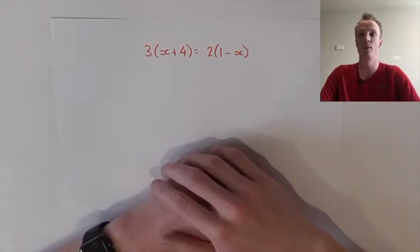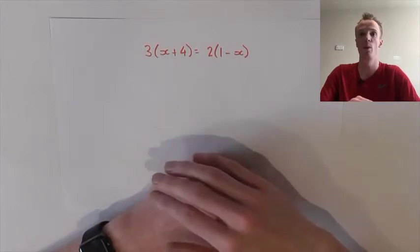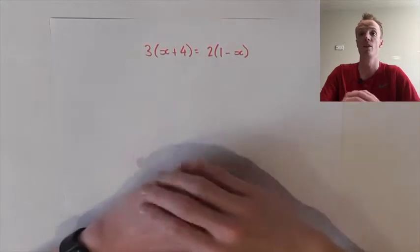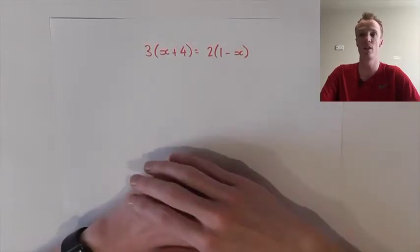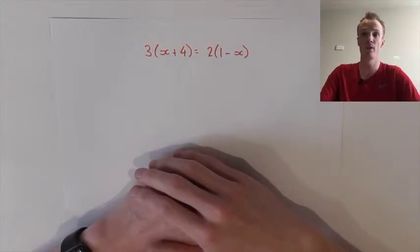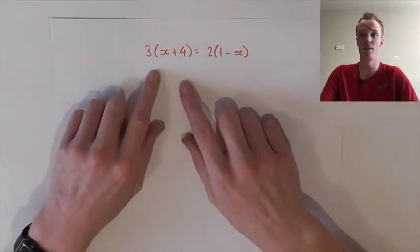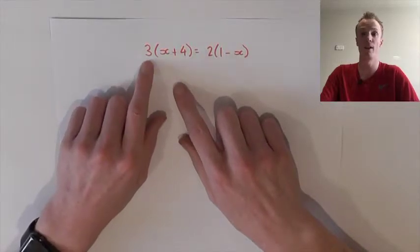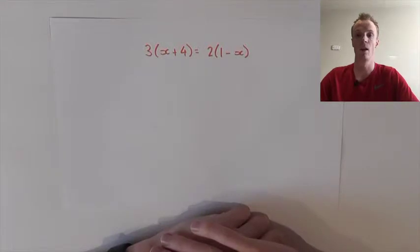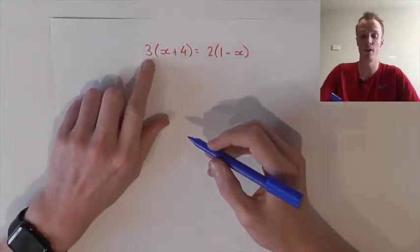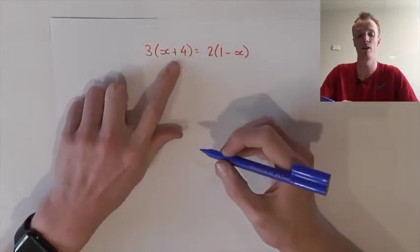Our primary goal here for these more complex problems remains the same as our simpler problems — we want to isolate the x on one side of the equation. To do that here we must first expand each side of the equation out of its factorised form. Factorised form is when a number is divided out of each term and put at the front of the brackets like we have here. To expand the brackets we must multiply the number at the front with every term inside the brackets.